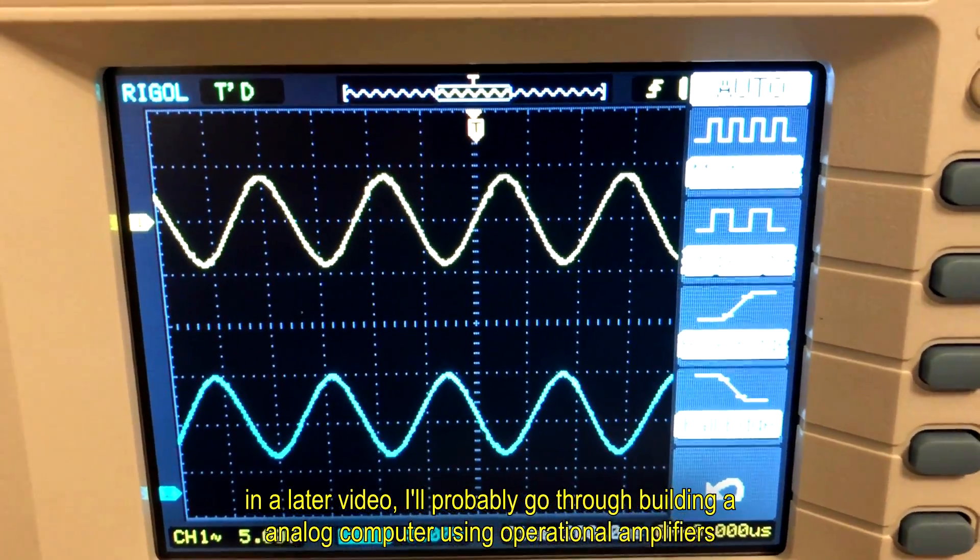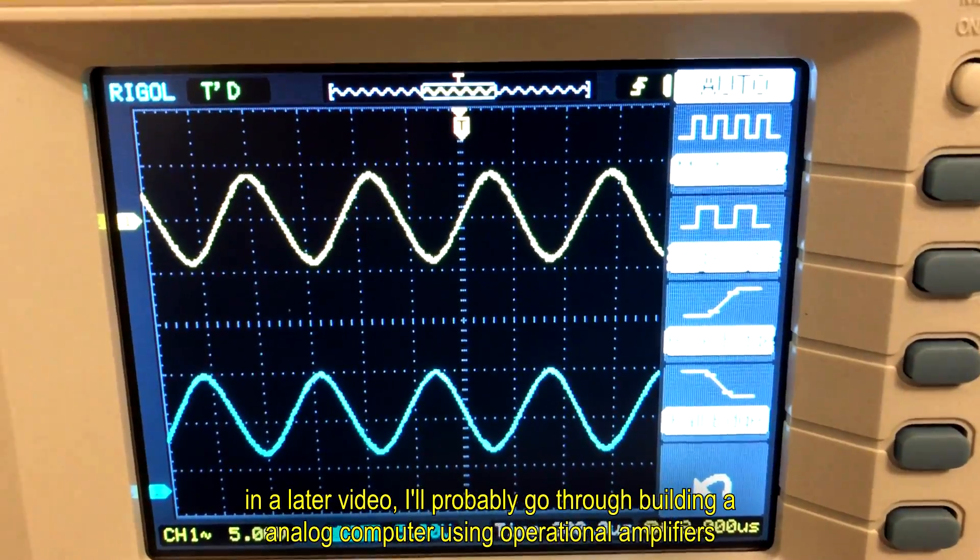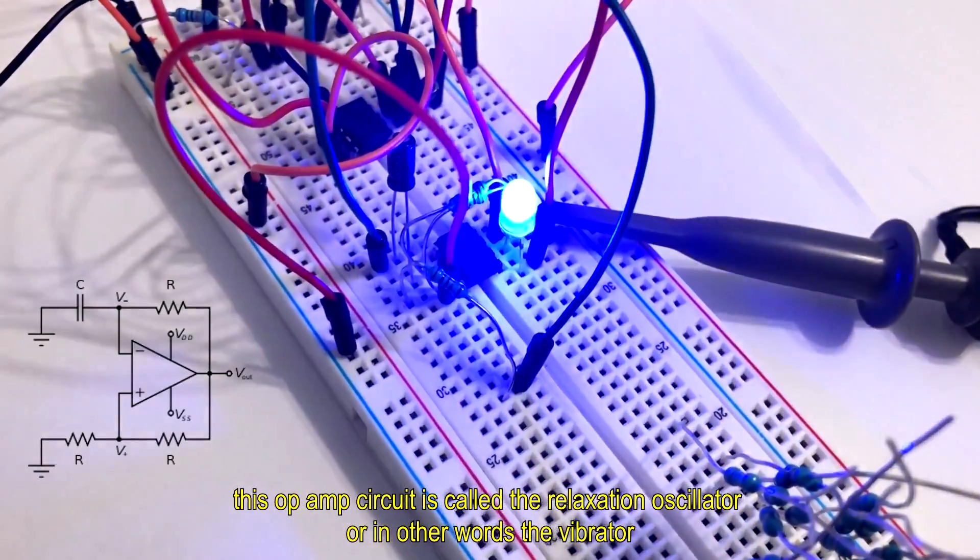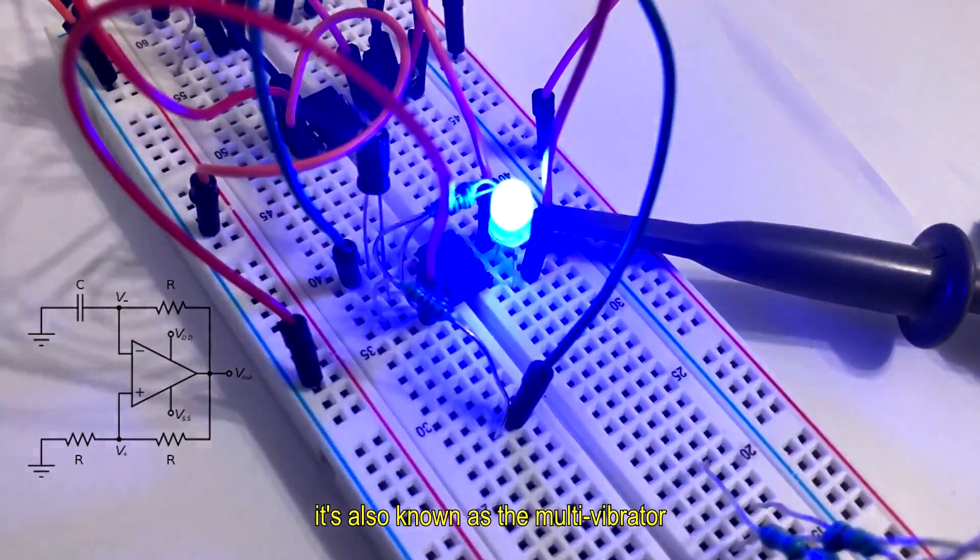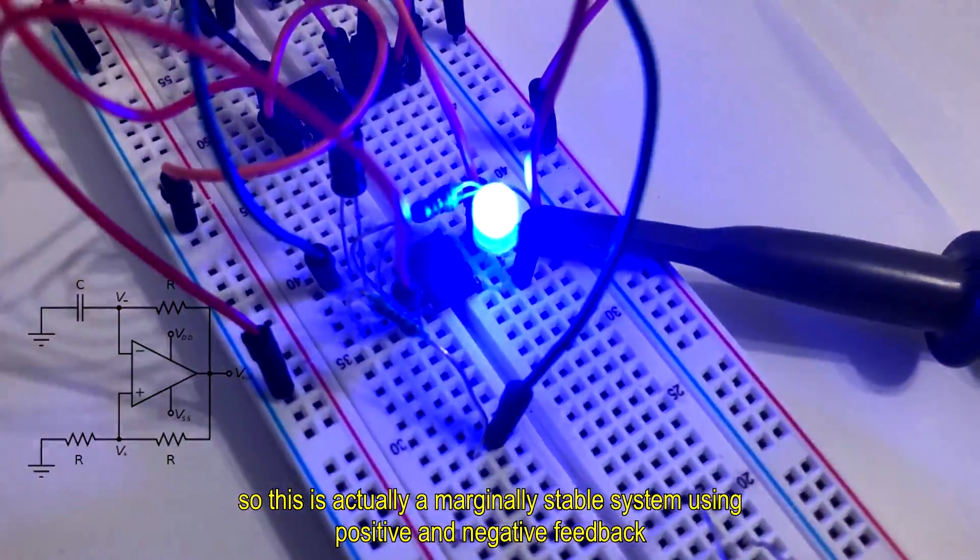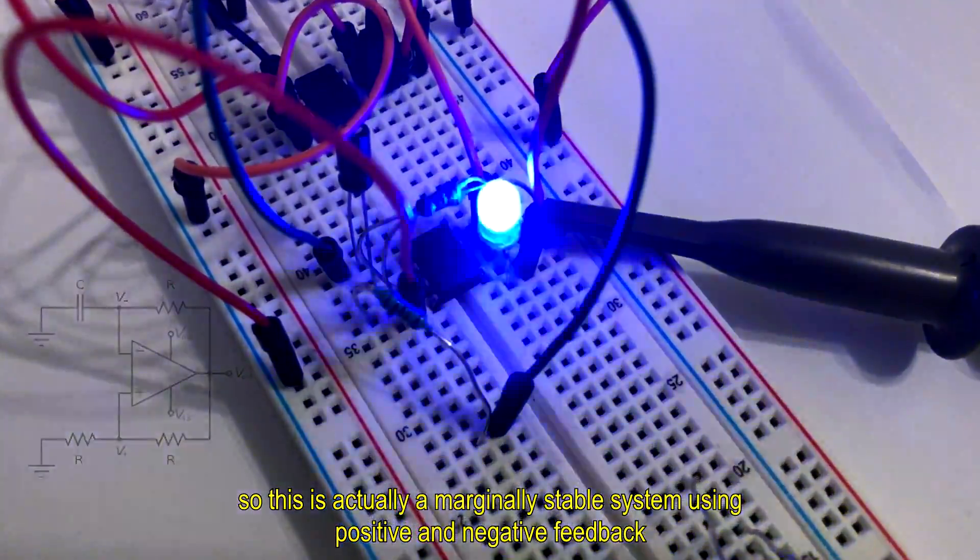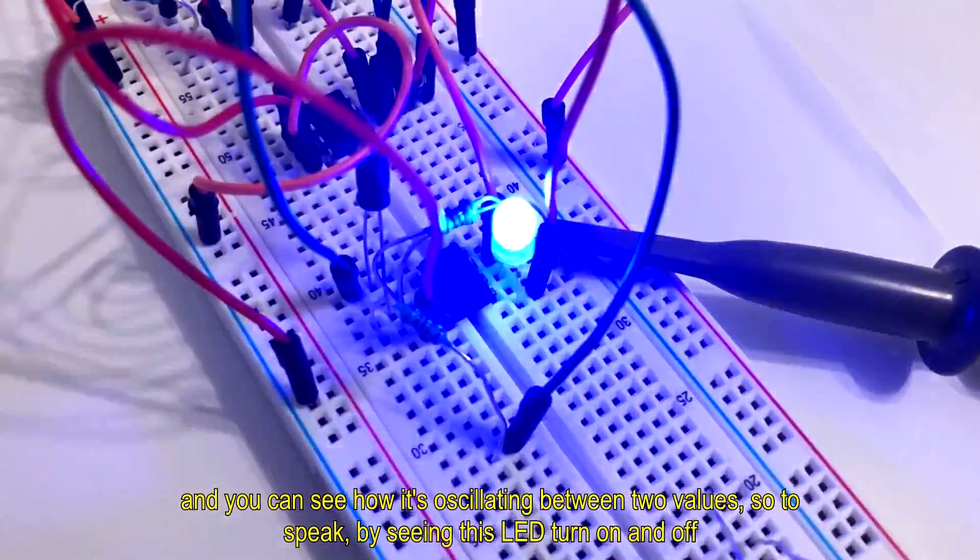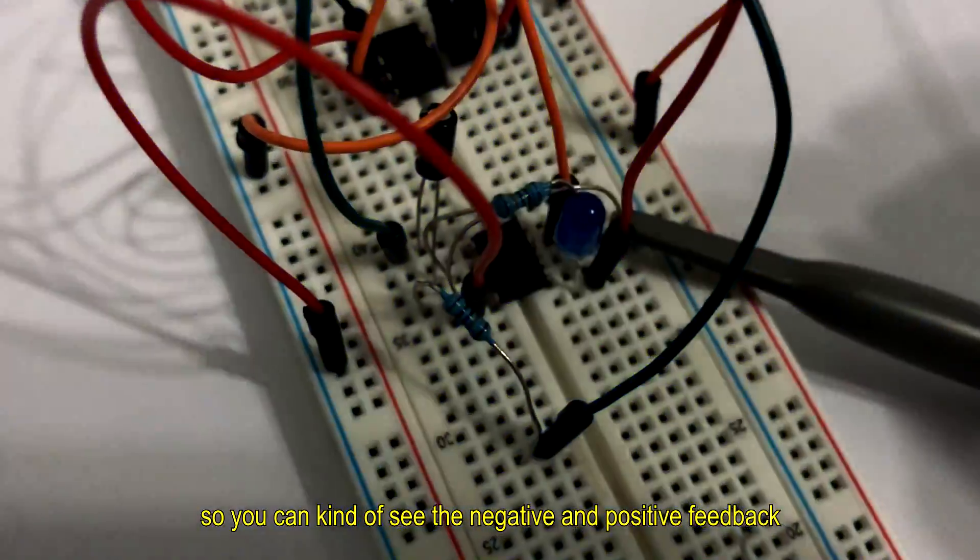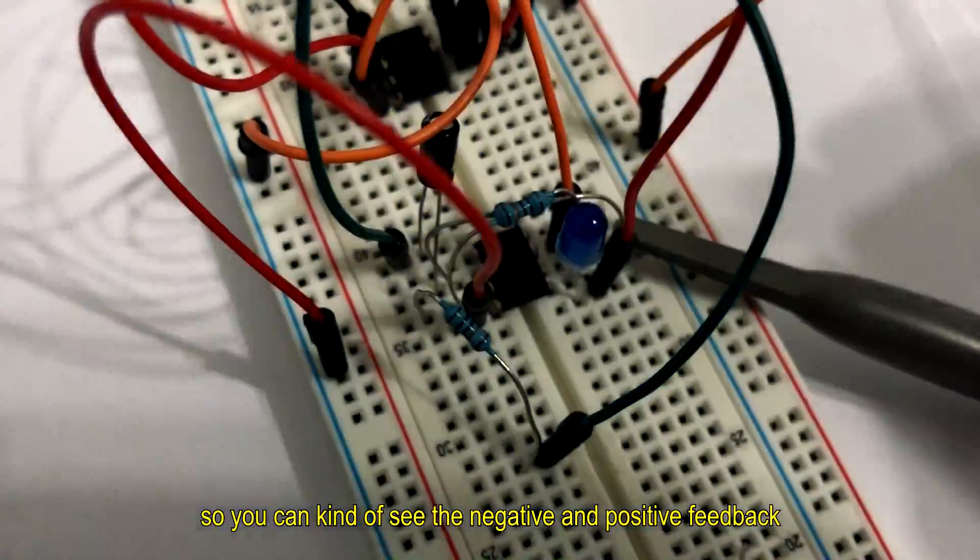This op-amp circuit is called the relaxation oscillator, or the vibrator. It's also known as the multi-vibrator. This is actually a marginally stable system using positive and negative feedback. You can see how it's oscillated between two values by seeing this LED turn on and off.